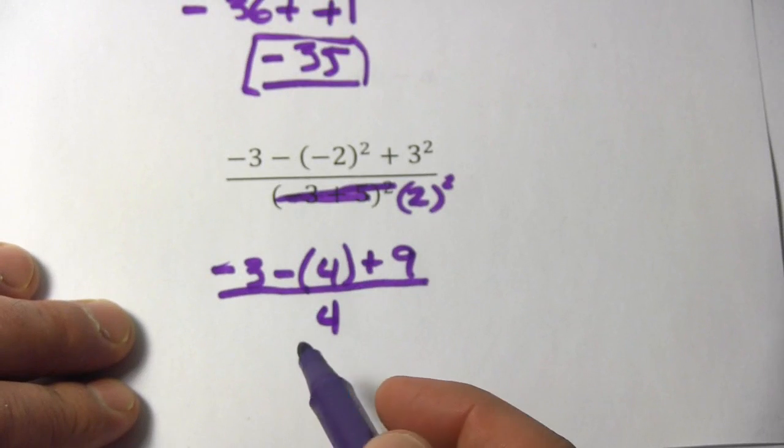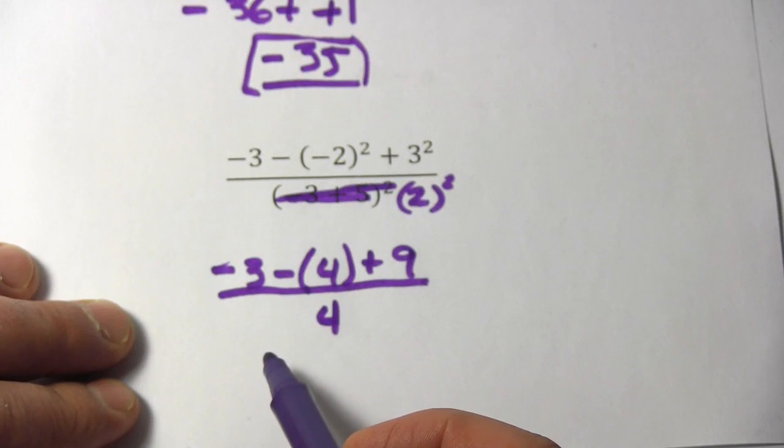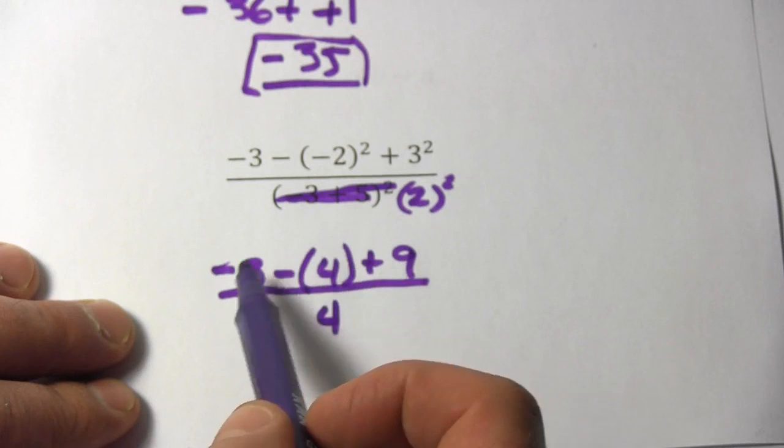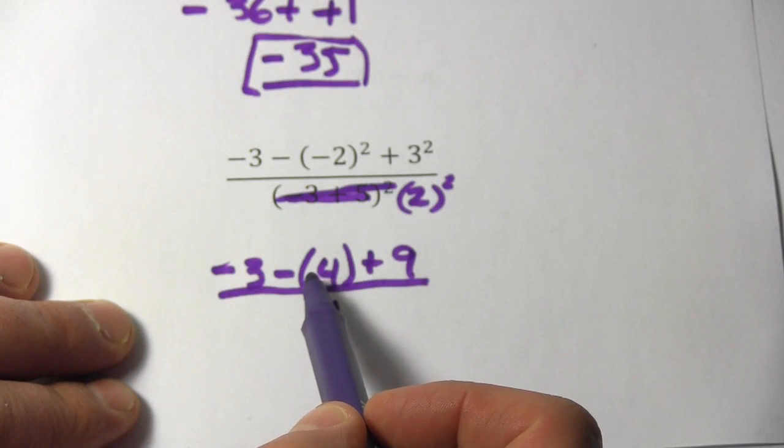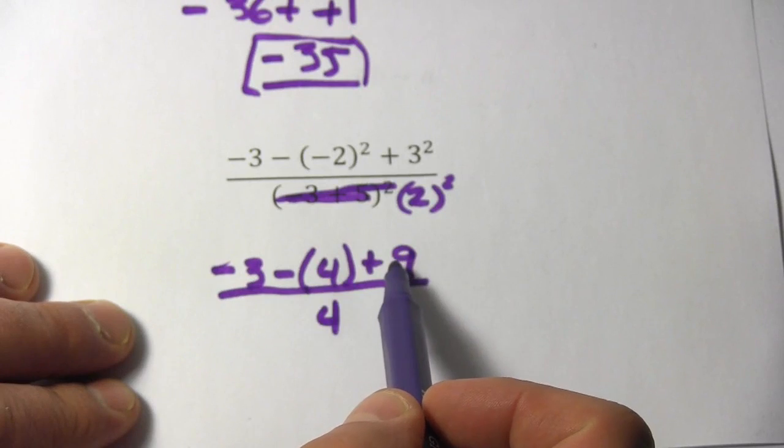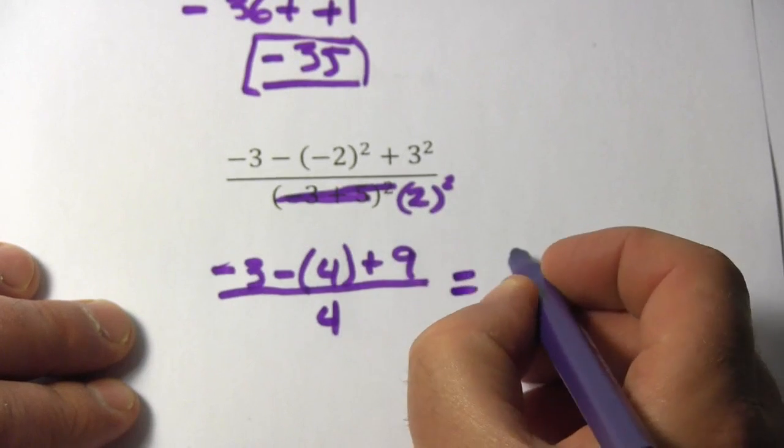Alright, we've dealt with the parentheses, and the exponents looks like all we really have to do here is some addition and subtraction. We've got negative 3 minus 4, that would be negative 7 plus 9, that would be 2 on the top,